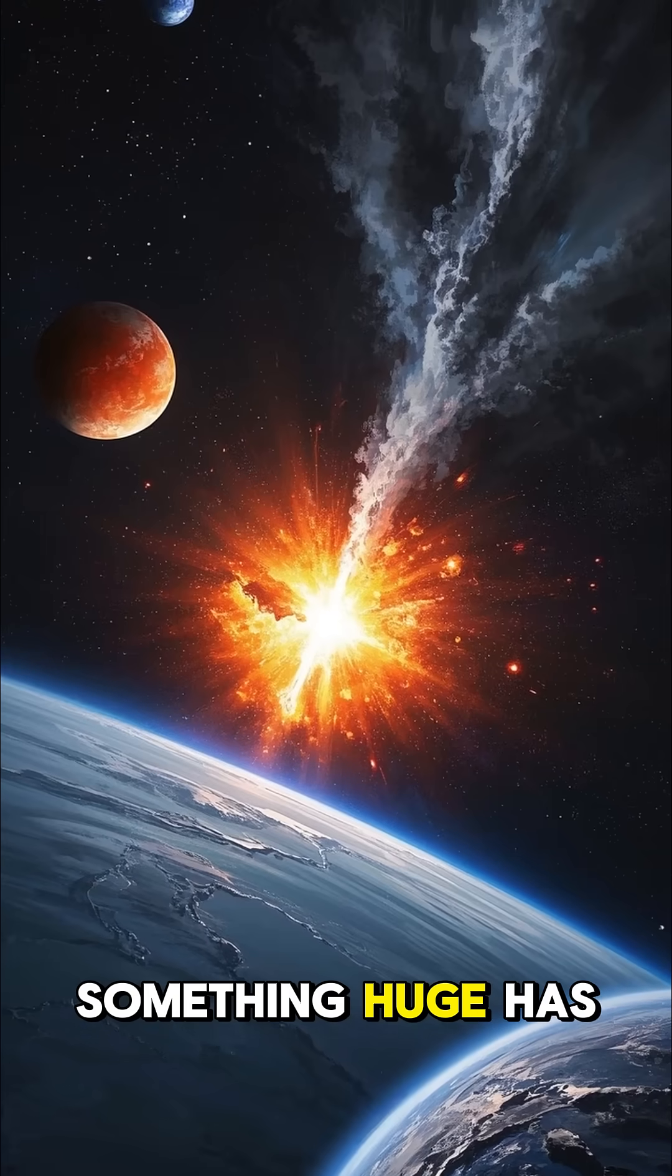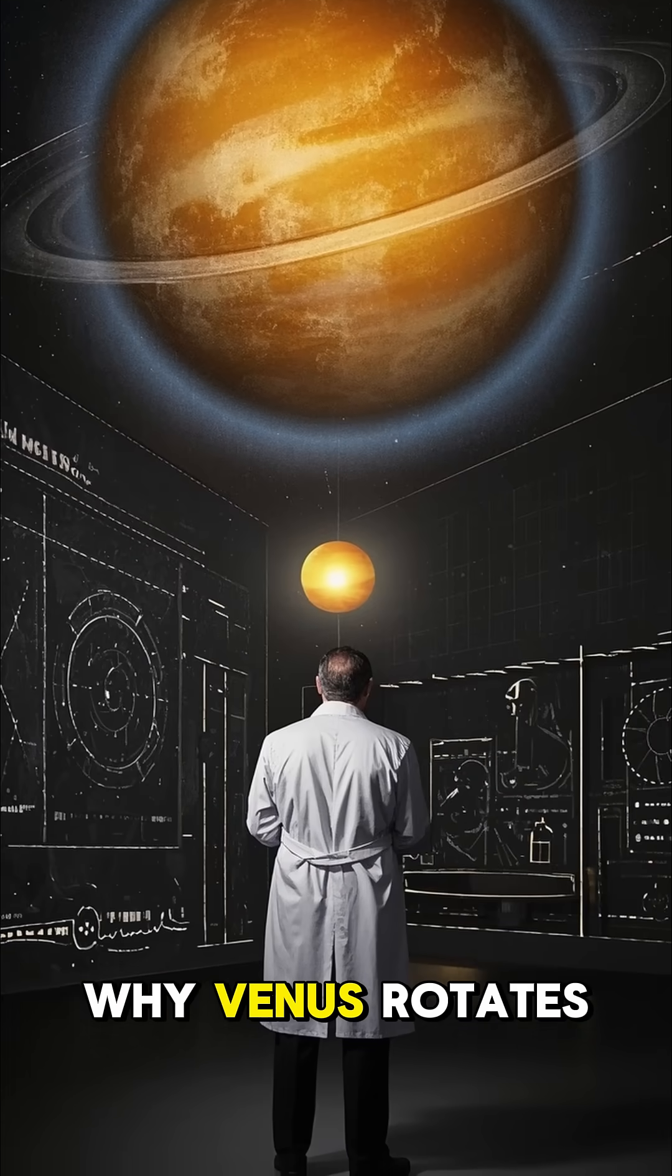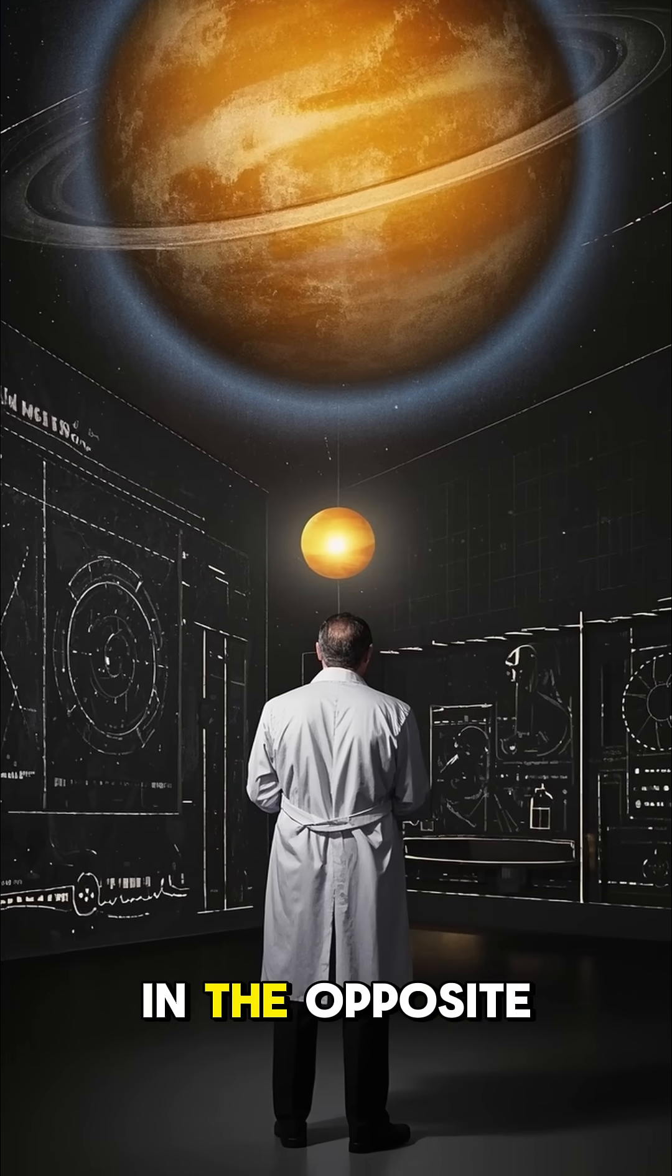Scientists think that something huge has crashed into Venus in the past. This would explain why Venus rotates so slowly and in the opposite direction.